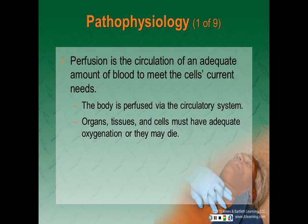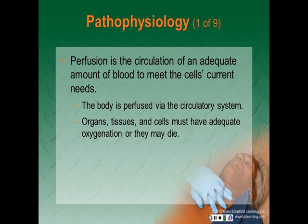As we talk about the pathophysiology of shock, you need to understand that perfusion is the circulation of blood within an organ or tissue in adequate amounts to meet the cell's current needs. The body is perfused via the circulatory system, which is a complex arrangement of connected tubes including arteries, arterioles, capillaries, venules, and veins. There are two circuits in the body: the systemic circulation and the pulmonary circulation in the lungs. The systemic circulation carries oxygen-rich blood from the left ventricle through the body and back into the right atrium. As blood passes through the tissues and organs, it gives up oxygen and nutrients and absorbs cellular waste and carbon dioxide.